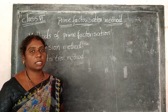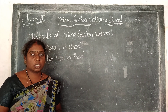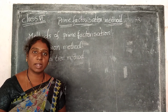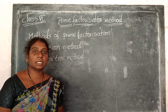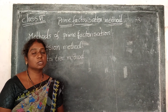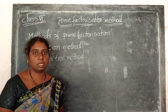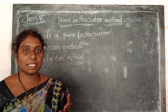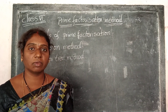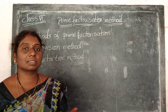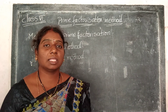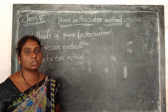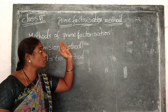First of all, what is meant by factorization? When we are going to find out the factors of one number, we divide that number into some factors — so that is called factorization. When a number is expressed as a product of factors of the given number, that process is called factorization.